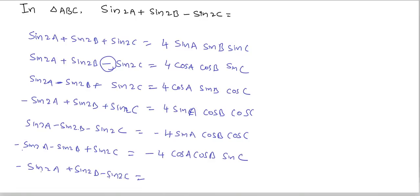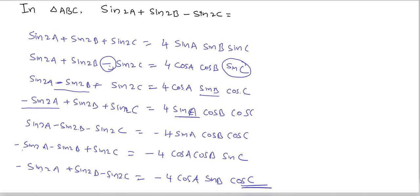And the case where angle C and angle A are minus equals -4sinB cosA cosC. Remember this trick: where the minus sign appears, write the sine of that angle; the remaining two terms become cosines. If two terms are minus, take -4 and write cosines for those two angles and sine for the remaining one.